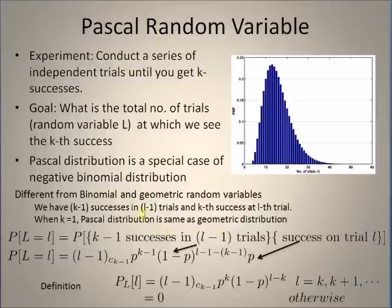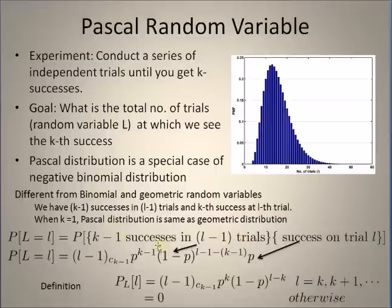The Pascal distribution — that is, the probability at L equal to l, meaning the probability at which we have the kth success — can be defined by the probability of two independent events. The first event consists of l minus 1 trials in which we have k minus 1 successes. The second independent event is the lth trial, where we have the kth success — that is, when we stop the experiment.